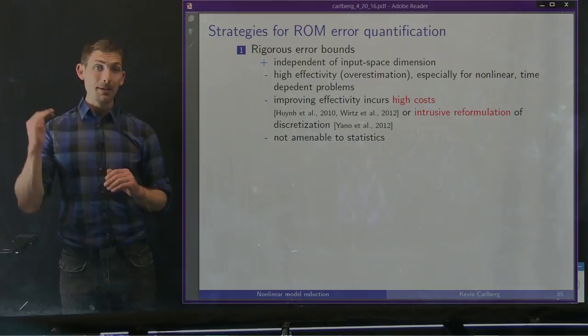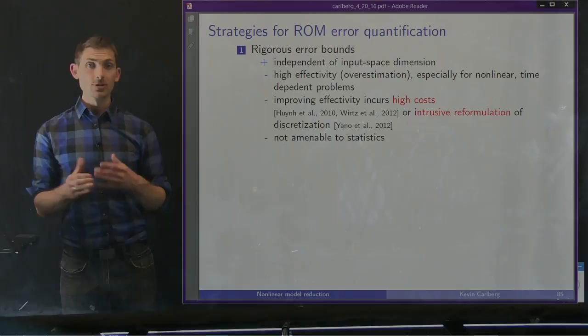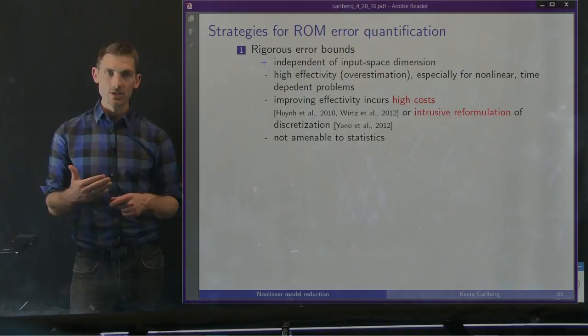Furthermore, rigorous error bounds only bound the error — they don't give you any statistics about the error. So if we're using the ROMs in an uncertainty quantification context, it's much more attractive to have some statistical description of the reduced order model error.